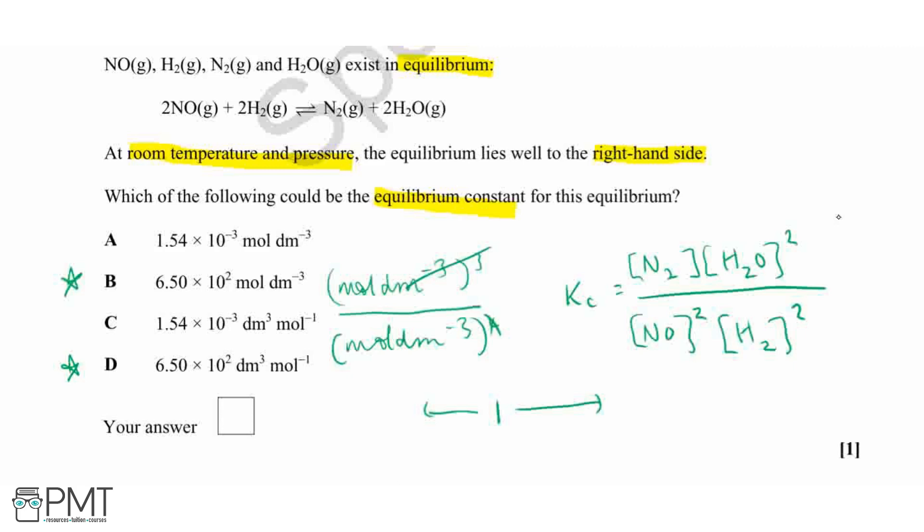So when we bring that up to the top, you change the signs. So our units are going to be mole to the power of minus 1, because we flipped it from 1 to minus 1, and then decimetres cubed. And this matches up with D. So our answer is going to be D.